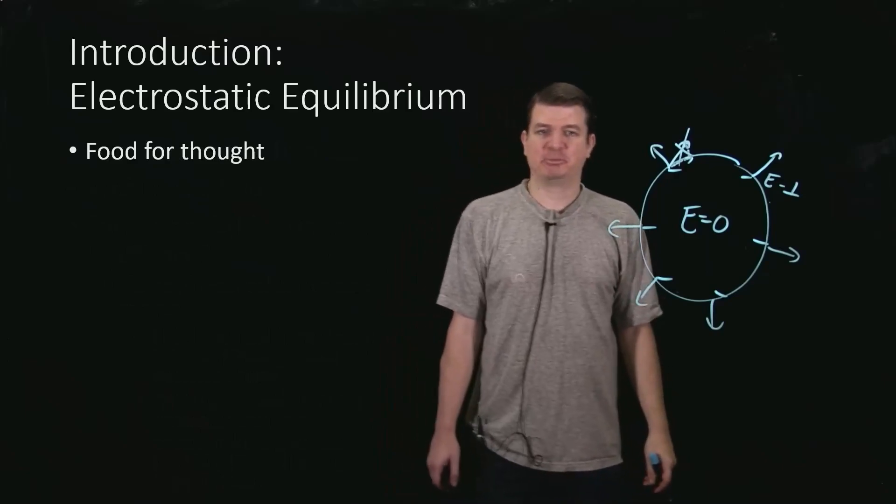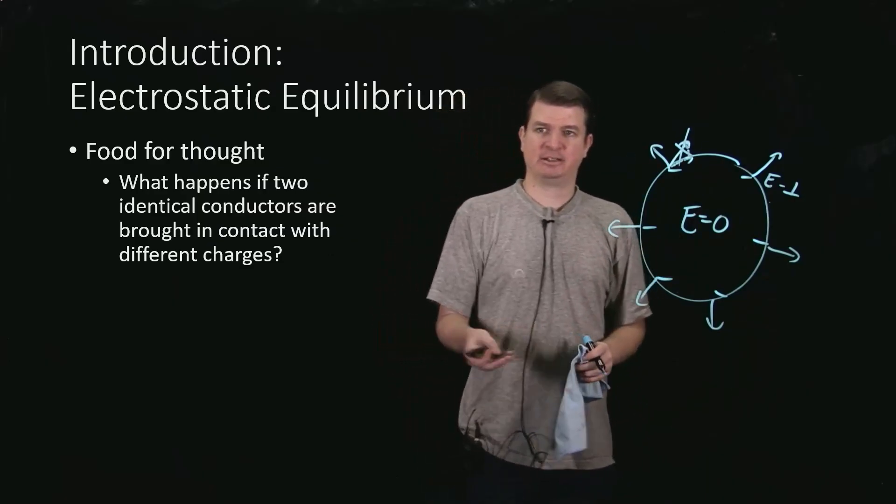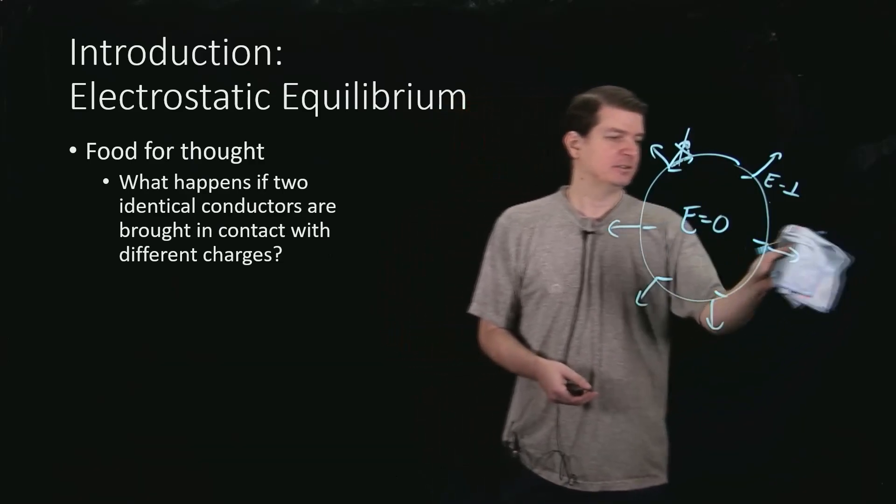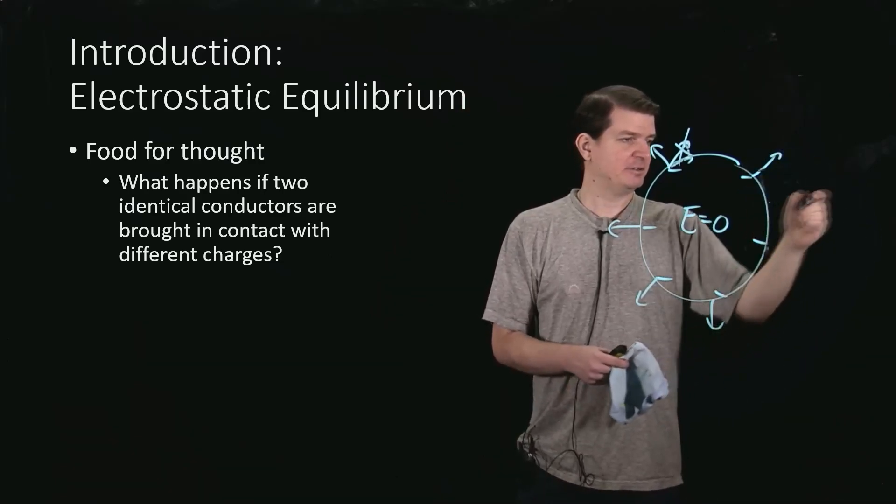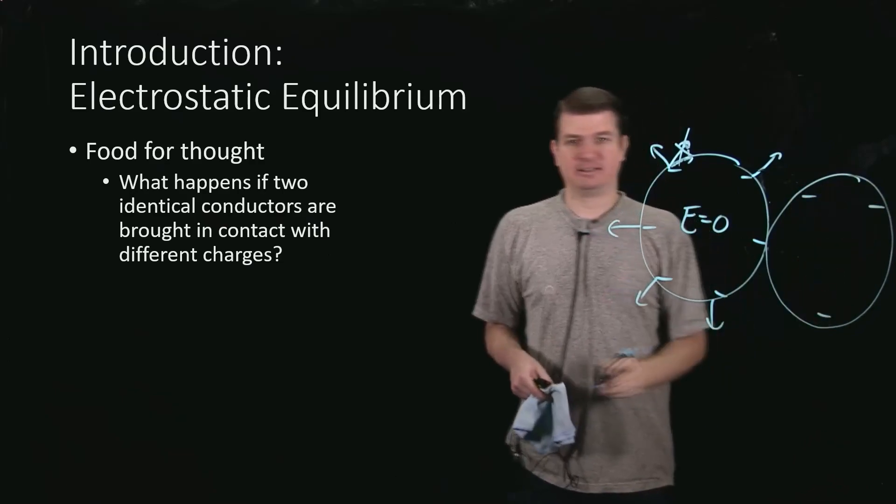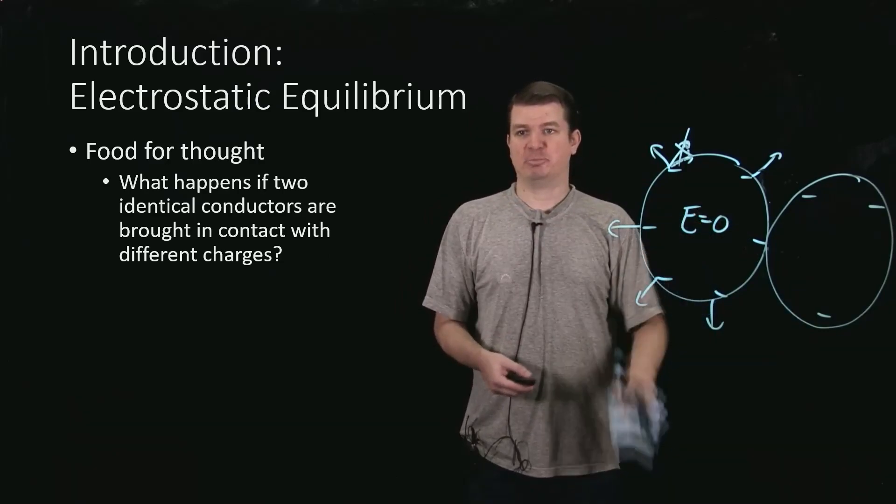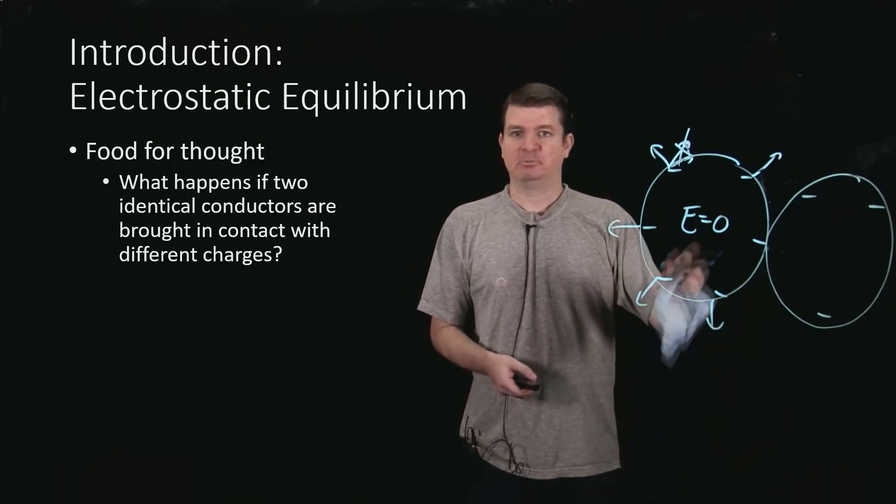So some food for thought about this. What would happen if we had two conductors with some charges, and they were in electrostatic equilibrium, and we brought them into contact with each other? So maybe this one had its six electrons, and then I brought another one over here, and maybe it only had three excess electrons. What would happen then?